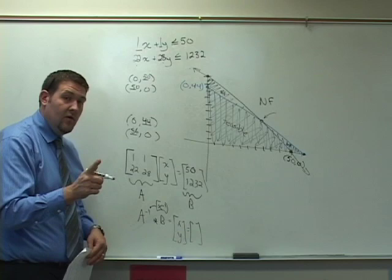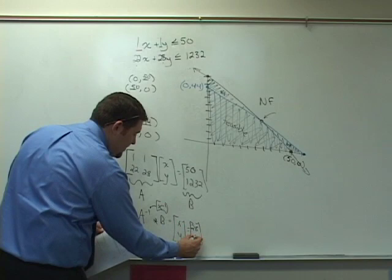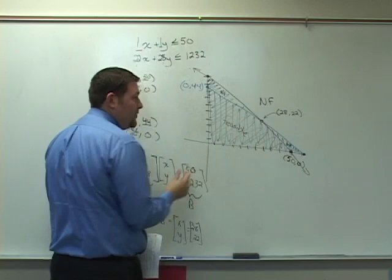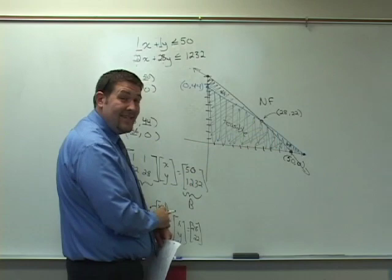If you want to pause and try that right now, you may do so. But the answers to this end up being that x is going to be 28 and y is going to be 22. So x is 28 and y is 22. Well, that means that this x is supposed to be 28 and y is 22 here, 28 apple trees and 22 peach trees.